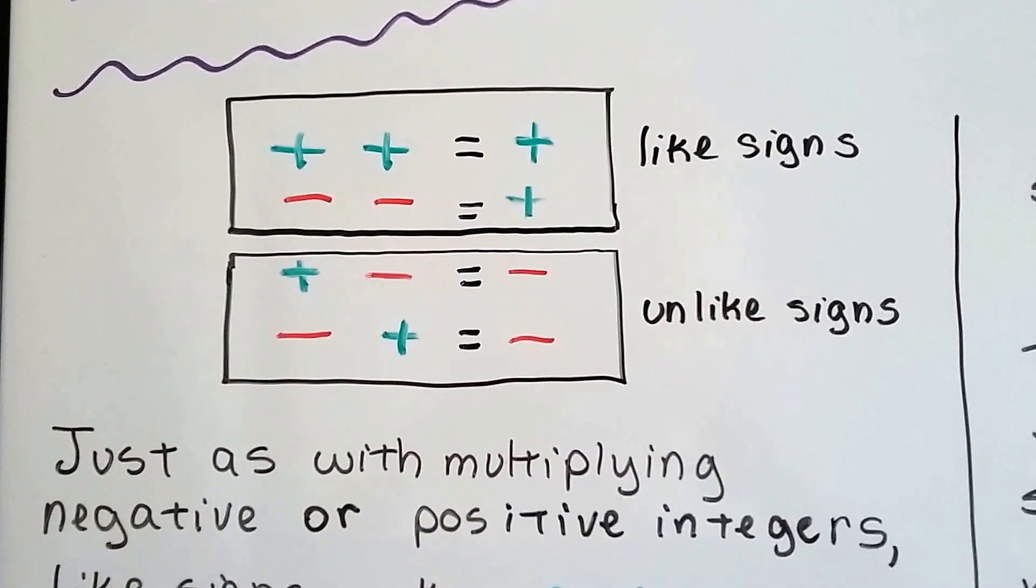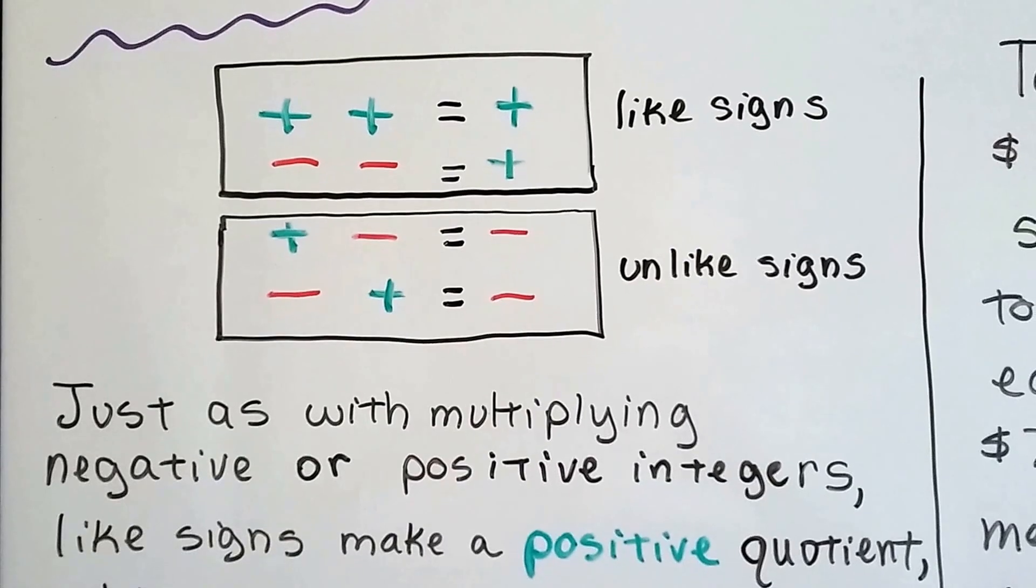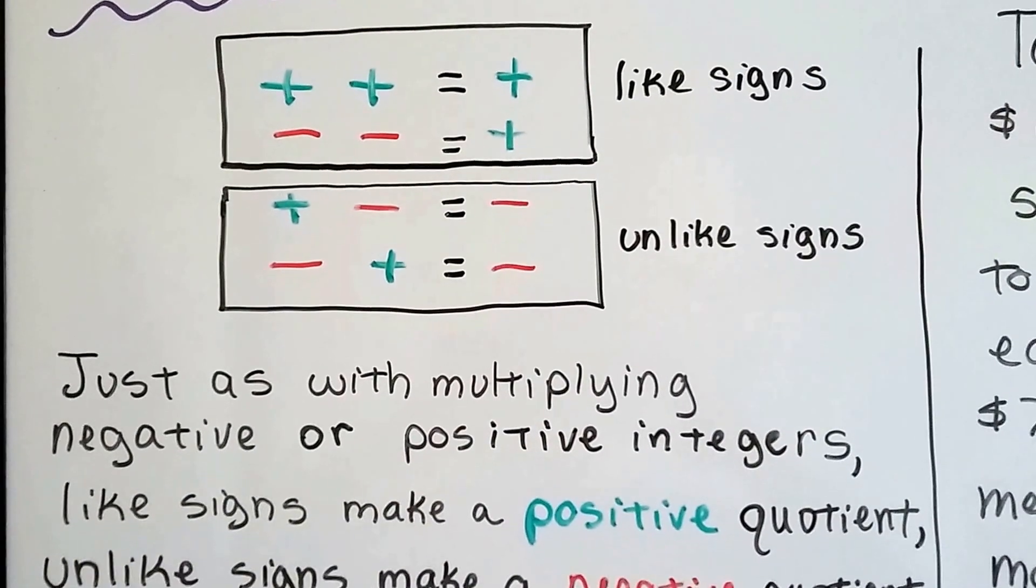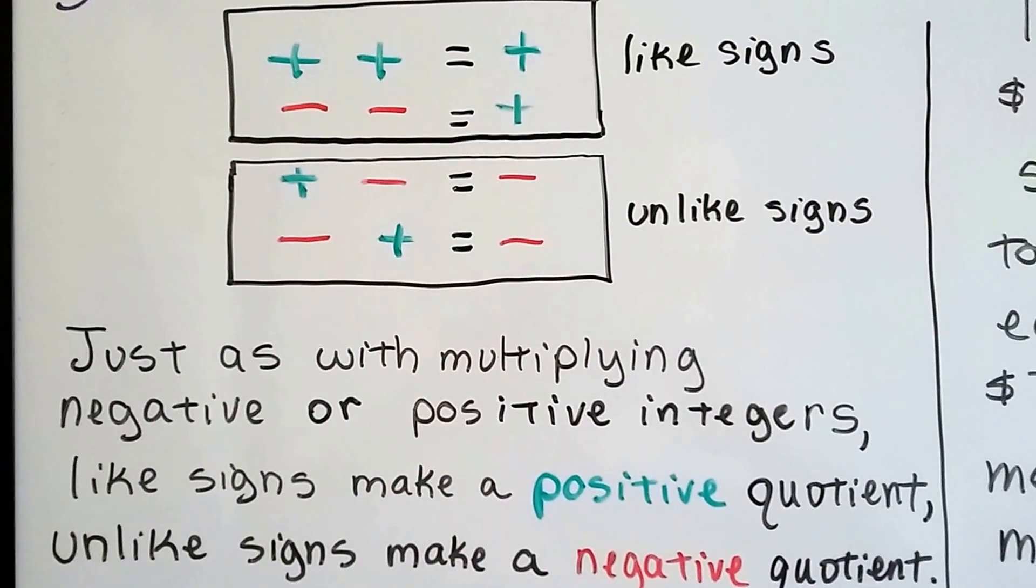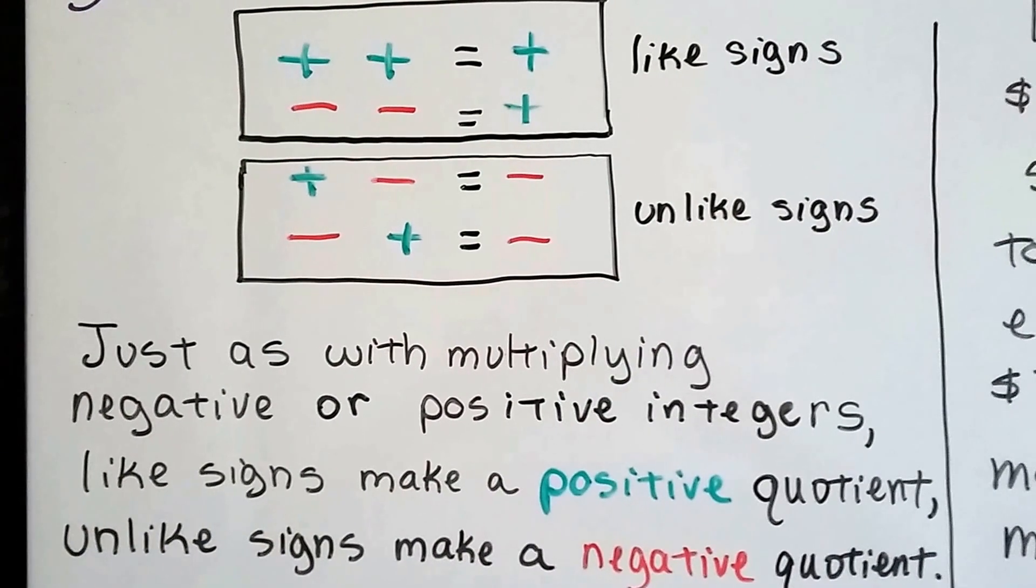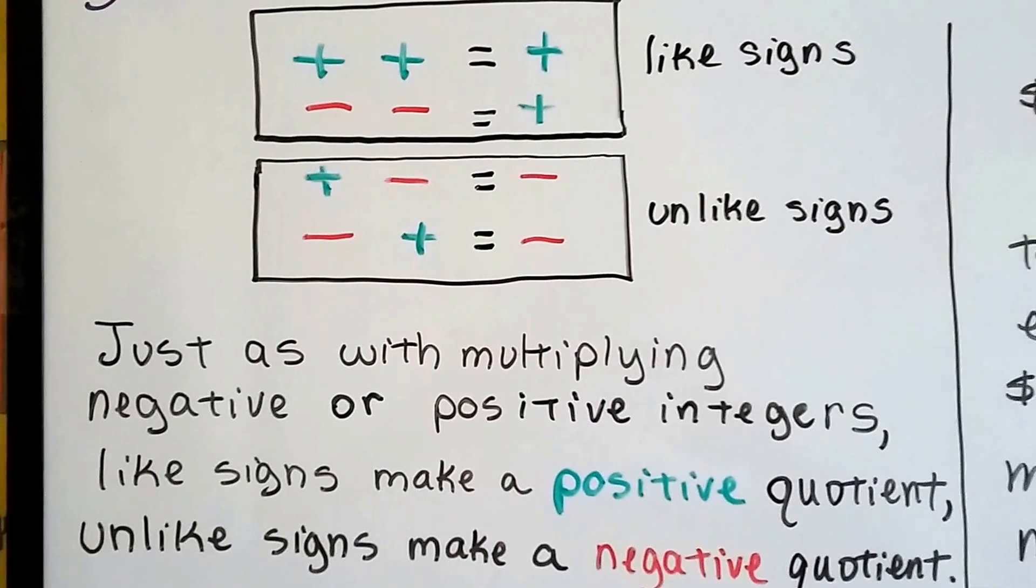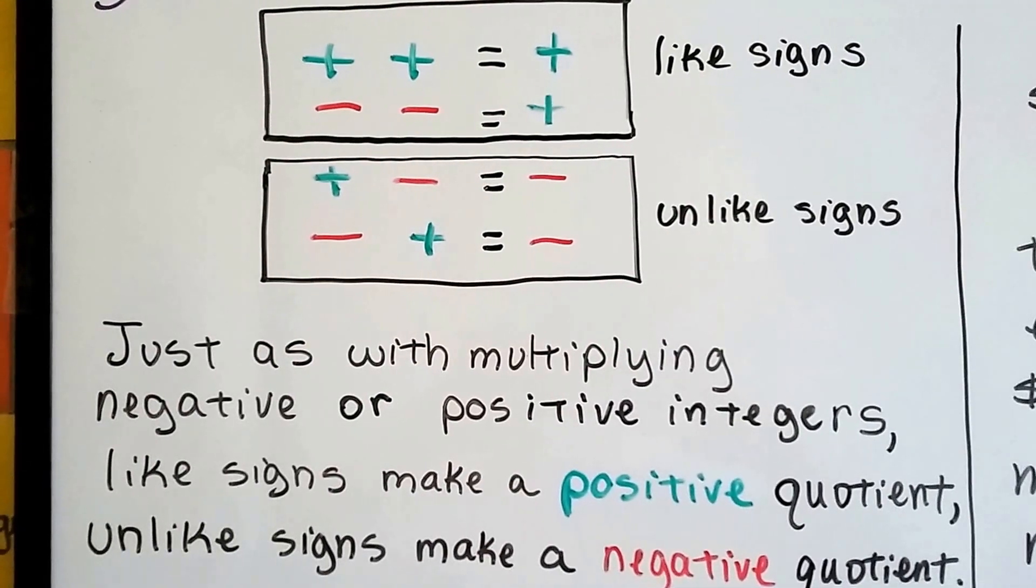Because just as with multiplying negative or positive integers, like signs make a positive quotient, and unlike signs make a negative quotient. They're the same rules as multiplying. Isn't that helpful? We don't have new rules to remember. We just do the same rules with multiplication as we do with division.